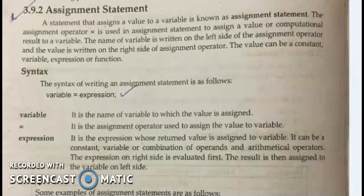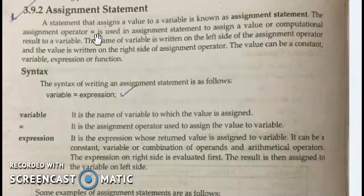Now we will discuss the assignment statement. As we discussed previously, the assignment operator is a single equal sign. In mathematics you used equal sign as two parallel lines, but in programming this equal sign is actually the assignment operator. The assignment operator assigns the value written on the right side into the variable written on the left side. This is the syntax of the assignment statement — the syntax being: variable, then the assignment operator, then an expression.